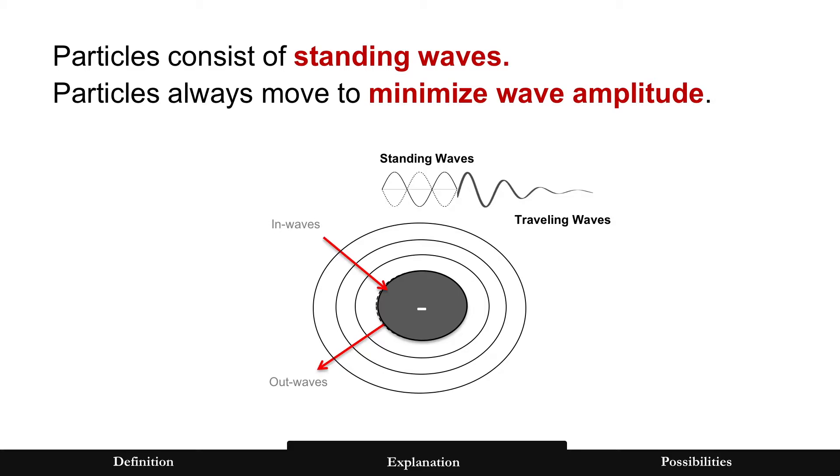Well, first let's do an explanation of what really matter and antimatter are. Now particles consist of standing waves, at least in energy wave theory they do. And one of the key rules is particles always move to minimize wave amplitude.